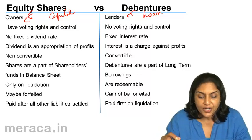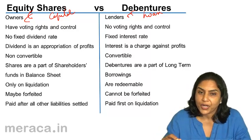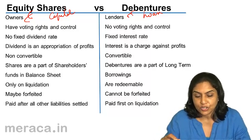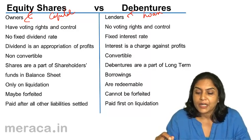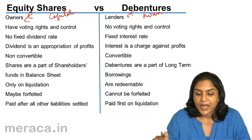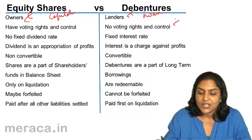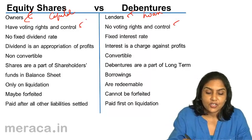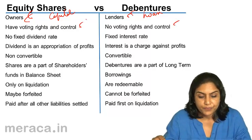Equity shareholders have voting rights and control. But debenture holders do not have any such rights or control.